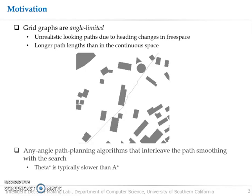This problem can be mitigated by smoothing the paths in a post-processing step or by interleaving the smoothing with the search, which is any angle path planning such as theta star. But theta star is typically slower than A star, performing a frequent line of sight check during the search.